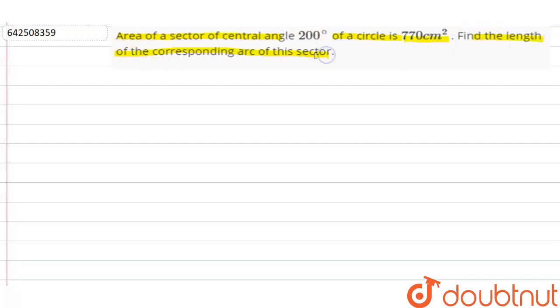Now we know the area of the sector is what? Area of sector is equal to theta, which is subtended by the arc on the center, upon 360 into pi r square.